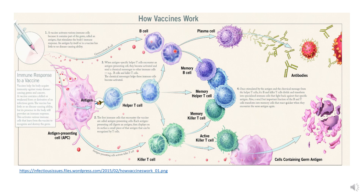A B cell is an antibody-secreting factory, so it gets activated, becomes a plasma cell, and now starts secreting antibody molecules. These antibody molecules are key to preventing reinfection or key for strong long-lasting immunity.